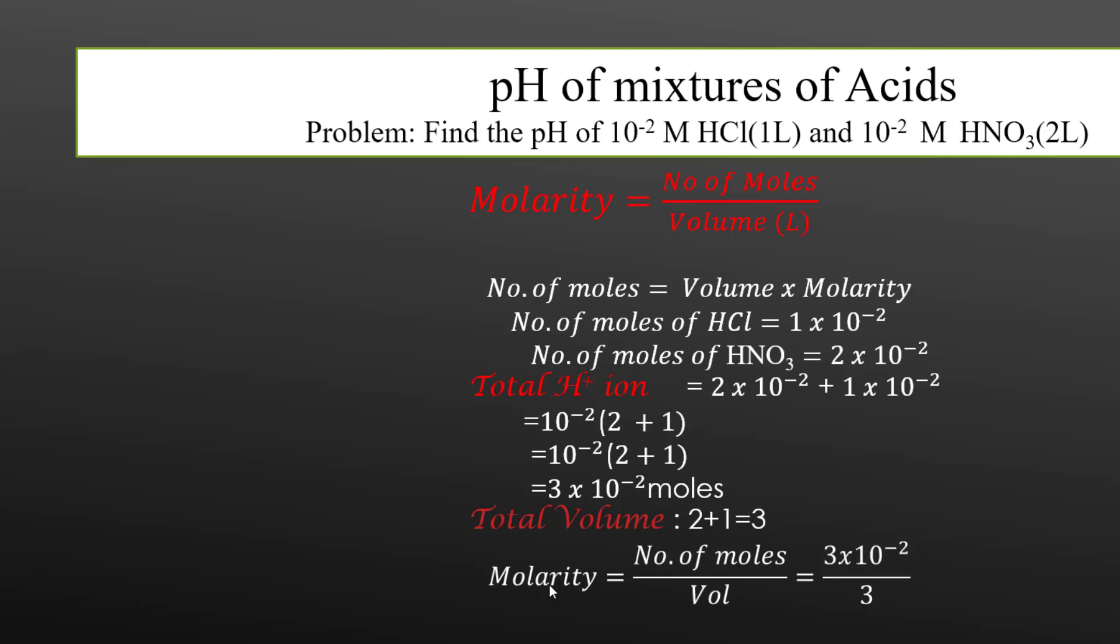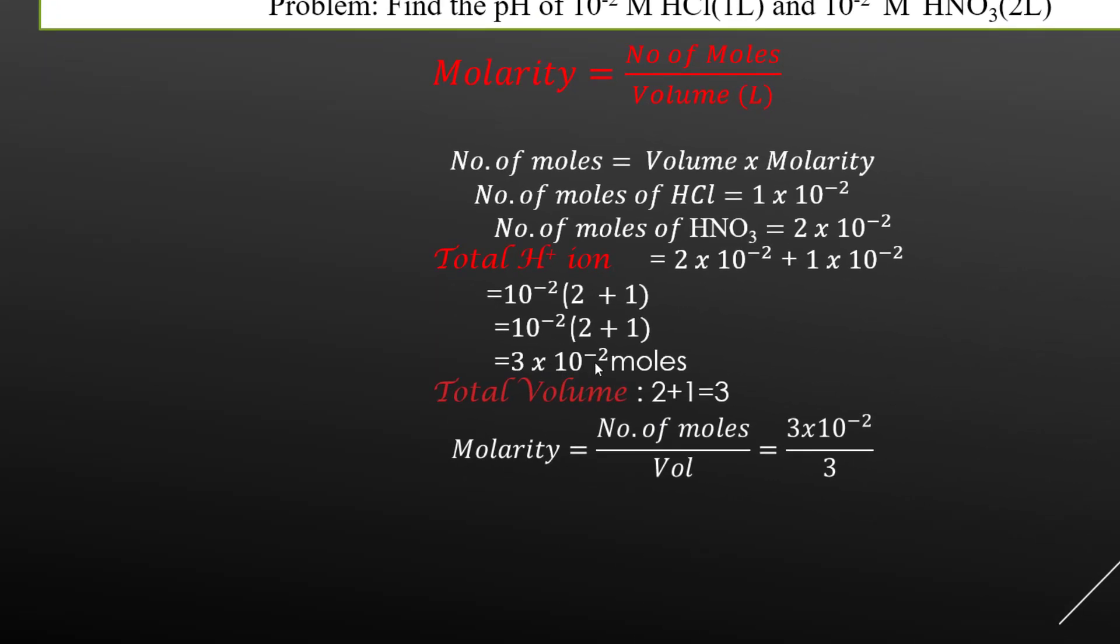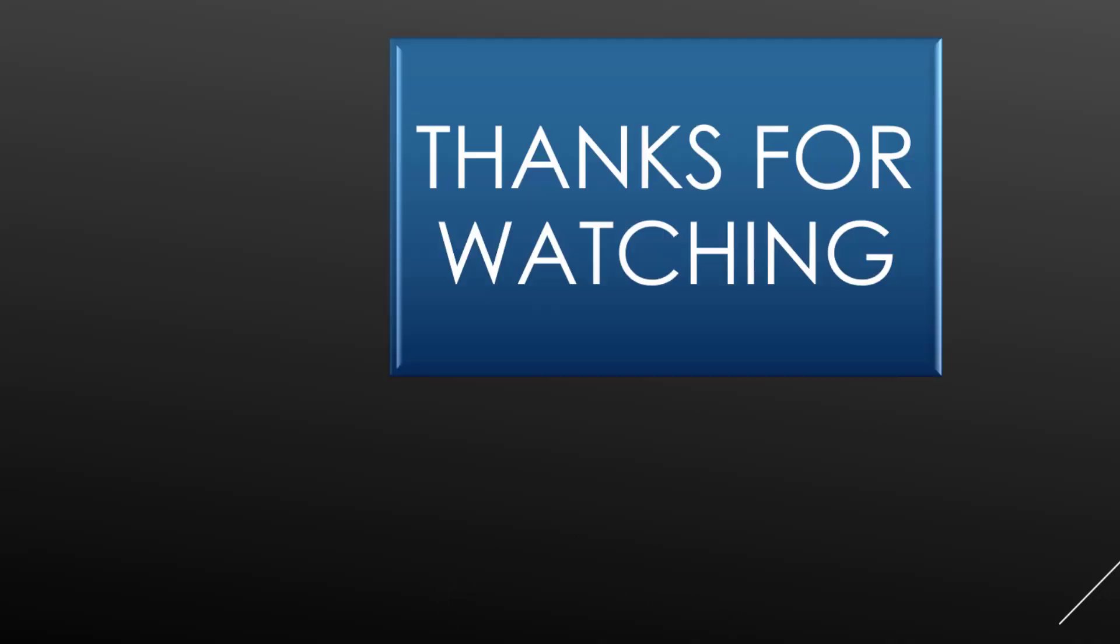Let's calculate the molarity. Number of moles divided by volume. So these are the number of moles 3 into 10 to the power minus 2 and this 3 is the volume. It would be cancelled out and we would be left with only 10 to the power minus 2 mol per liter. Let's put this number 10 to the power minus 2 over here and the rest is simple. You can simply take the log of this number and the pH would come out to be 2.